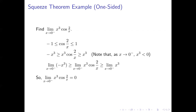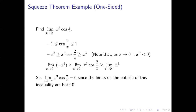So by the squeeze theorem, since x³·cos(2/x) is always in between -x³ and x³, and both of those approach 0, the limit as x approaches 0 from the left of x³·cos(2/x) is also equal to 0. This worked just like our first example — the one-sided limit just required a little sign switching with the inequalities.